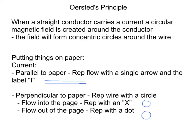This lesson is to introduce Oersted's Principle, based on the experiment you saw in the brief video before. When a straight conductor carries a current, a circular magnetic field is created around the conductor. The field will form concentric circles around the wire. That's Oersted's Principle.